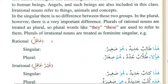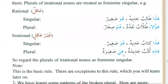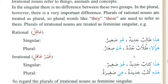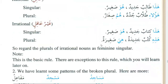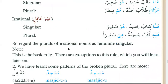For 'aqil (rational) plural, we use the real plural forms hum and haulai. But for ghair 'aqil (irrational), we use the singular feminine form: hazi and hiya. For example, 'kutub' is a non-living thing, so we use hazi and hiya for its plural. Plurals of irrational nouns are considered singular feminine.